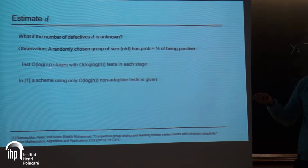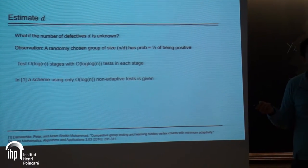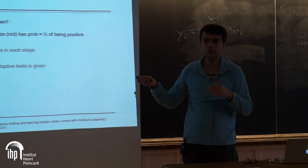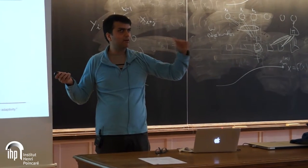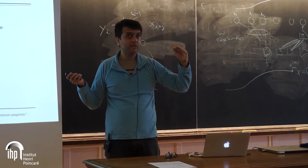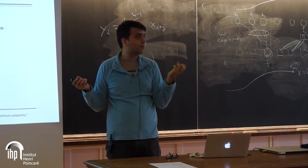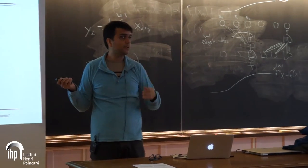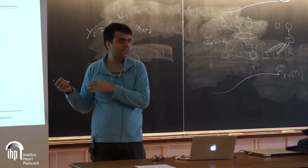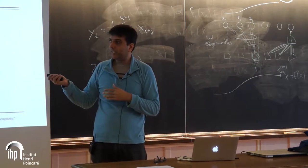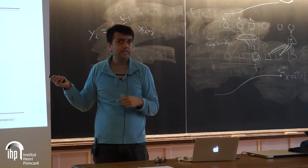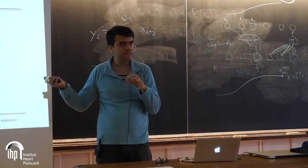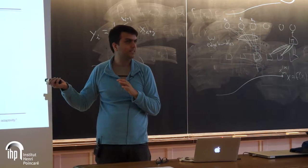Here's a naive way of identifying d. First choose a random group of size 1, test to see if it's defective, repeat log log n times. Then choose a random group of size 2, repeat log log n times, and so on. What you should see is threshold-like behavior — for very small groups, you should see negatives most of the time, and at some point, if your group size becomes very large, there will be an item in the test with high probability. You want to identify the point where the phase transition happens. With order log n stages and order log log n tests per stage, you can identify this phase transition. With a slightly better choice of parameters, you can shrink this down to order log n tests.